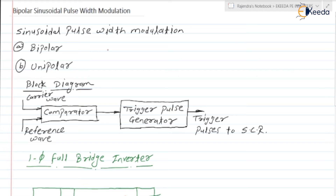In the Sinusoidal Pulse Width Modulation there are two types: one is the Bipolar, and the second one is the Unipolar. We will discuss the difference between the two, but in today's video we are going to discuss the Bipolar Sinusoidal Pulse Width Modulation Technique.